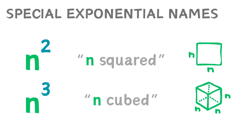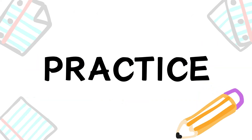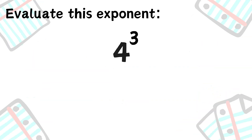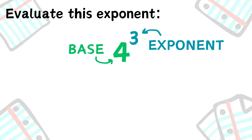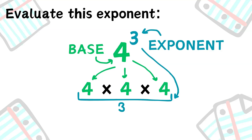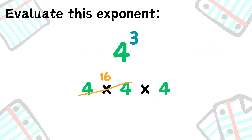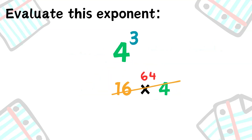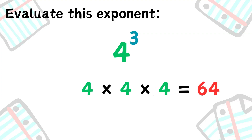Now let's do a bit of practice. What would this notation mean? The base is 4 and the exponent is 3, so we are told to multiply 4 together 3 times. 4 times 4 is 16, times 4 is 64. So 4 to the power of 3 is 64.